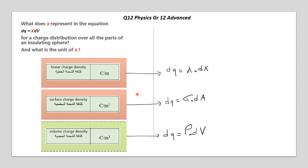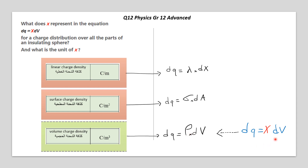We continue analyzing the options, and here we are with this equation. So, dQ equals rho dV. Oh, it's too similar. So, x represents the volume charge density — rho. Look at the similarities: dQ equals rho dV. And that's the answer to this question.